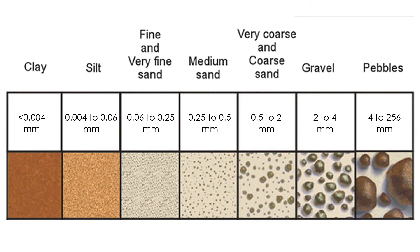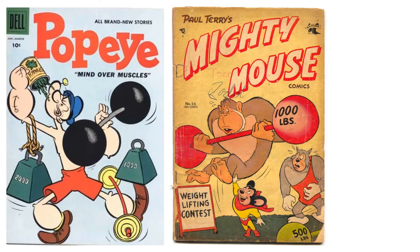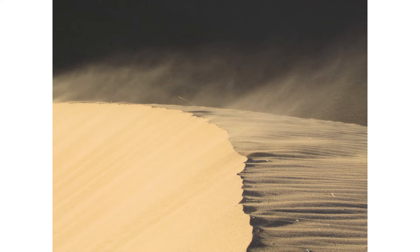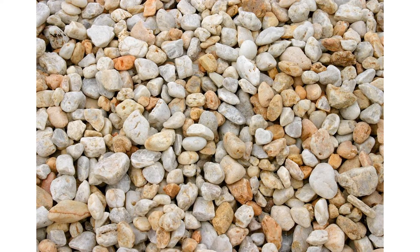There is one more factor to consider: grain size. Not all sedimentary particles are the same size. Gravel and pebble-sized particles are large, while clay and silt-sized particles are small. It takes more energy to move a large, heavy grain than a small, light one. Natural processes are far more likely to move small particles like clay, silt, or sand, than larger particles like pebbles and stones.